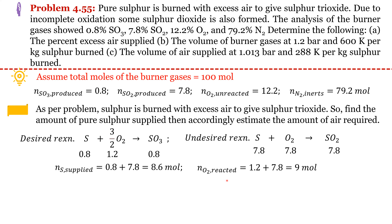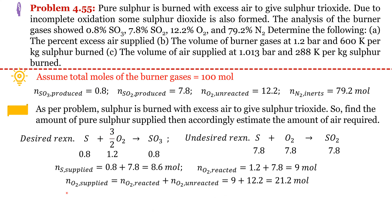Sulfur from the desired reaction is 1.2 moles, and from the undesired reaction is 7.8 moles, giving total sulfur supplied equal to 9 moles. Total oxygen supplied equals reacted oxygen plus the unreacted oxygen already present in the leaving gases, which comes out to 21.2 moles.